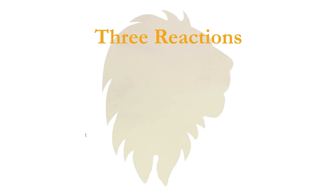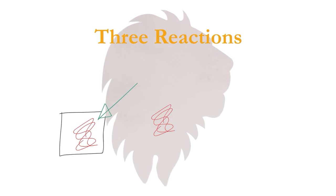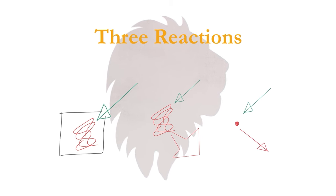So there are three different types of reaction to a trigger. On the left, an underreaction, in the middle, an overreaction, and on the right, a just right or Goldilocks reaction.